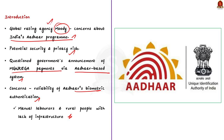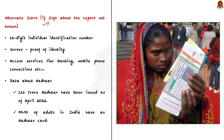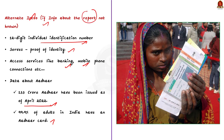If you don't have any idea about the report given in the question, you can give a general intro. Aadhaar is a 12-digit individual identification number issued by the government of India. It serves as a proof of identity anywhere in India and helps residents access services like banking, mobile phone connections, etc. More than 133 crore Aadhaars have been issued as of April 2022, and 99.9% of adults in India have an Aadhaar card. Since its inception, Aadhaar has helped bridge the digital divide and is useful for various government direct benefit transfer schemes.